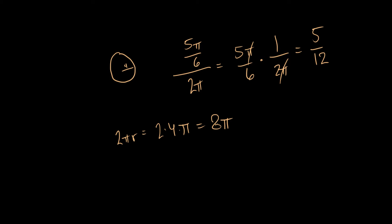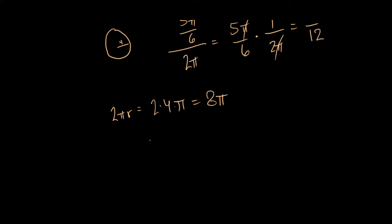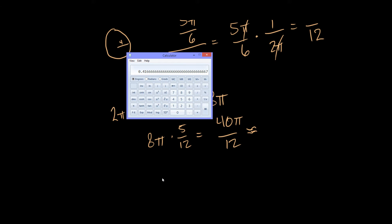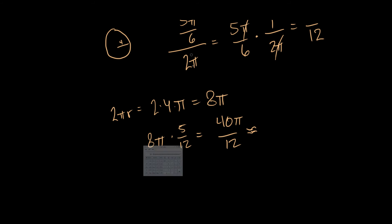Now to find 5/12 of that I'm just going to multiply. It's going to give us 8π times 5 over 12, which is going to give me 40π over 12. And since they ask for the nearest inch I'm going to approximate π as being 3.14. So 40 times 3.14 divided by 12 gives us around 10.46. So I'm going to say that's 10.5.